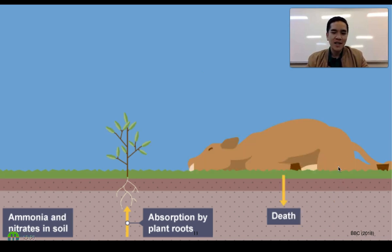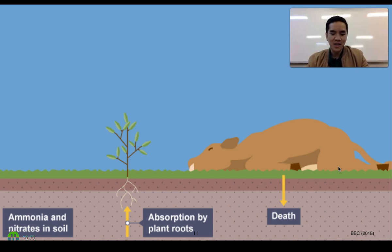Another point to consider is that organisms eventually die. When plants and animals undergo death, bacteria will also help decompose these organisms, break down those compounds, and return these nutrients — in particular nitrogen — back into the soil so that it can be reused again.